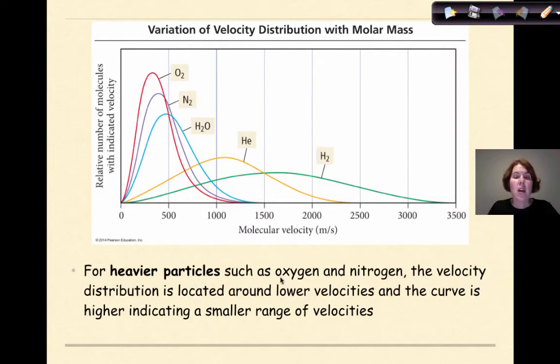For heavier particles, such as oxygen and nitrogen, the velocity distribution is located around lower velocities, and the curve is higher, indicating a smaller range of velocities. So my curve is higher because my range is smaller, and because they're heavier, they're found more commonly around the lower velocities. This is the average velocity of oxygen. That would be its peak right here. Here would be the average velocity of nitrogen. So because they're heavier, they're going to have a smaller range of velocities.